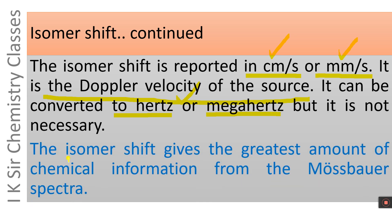The isomer shift gives the greatest amount of chemical information from Mössbauer spectra. It is the most powerful tool in the interpretation of Mössbauer spectra and gives the maximum amount of chemical information.